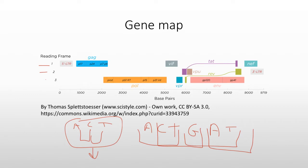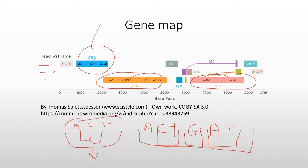Most texts about HIV will get to the surface level and tell you that there are structural proteins: GAG, POL, and ENV. POL was named because it contains the polymerase — the reverse transcriptase. ENV encodes the two major envelope proteins, GP120 and GP41. GAG contains a whole bunch of virion structural proteins. All three of these are grouped together and called structural proteins.